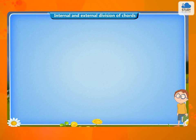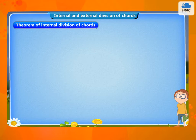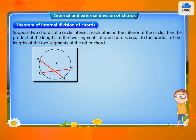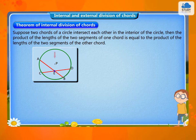Internal and external division of chords. Theorem of internal division of chords: Suppose two chords of a circle intersect each other in the interior of the circle, then the product of the lengths of the two segments of one chord is equal to the product of the lengths of the two segments of the other chord.